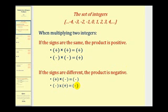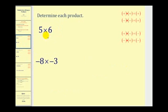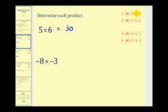Let's look at some examples. The first one we should already know: five times six is equal to thirty. But it does fit the rule of a positive times a positive equals a positive.